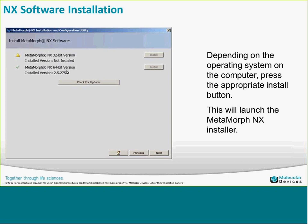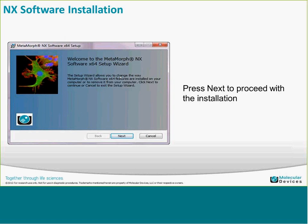To actually install the NX software, once you've clicked on the install for the specific version, the installer launches — in this case the 64-bit installer. Click Next to proceed, accept the license agreement, and then select Typical for the install. Complete adds a few things mostly used by programmers. For most installations, use the Typical option. Click Install, watch the progress bar, then click Finish when done.